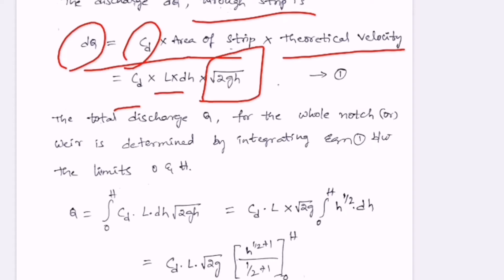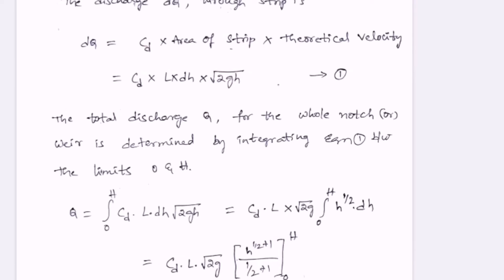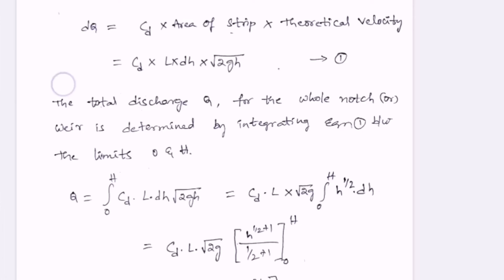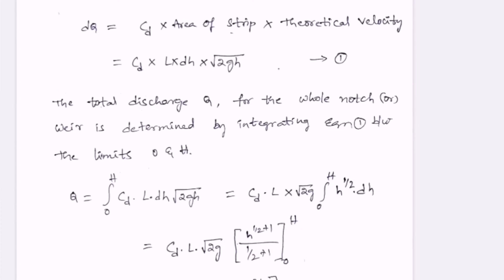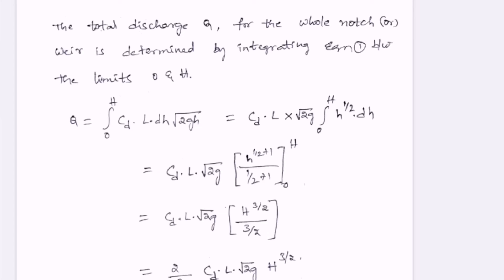To get the total discharge we have to integrate dQ to get the final discharge Q. The total discharge Q for the whole notch or weir is determined by integrating this equation within the limits 0 to capital H, because the sheet of water flows over the crest at height H — we consider the bottom as 0 and the top as capital H. So Q is equal to the integral from 0 to H of CD L dH root 2gH.